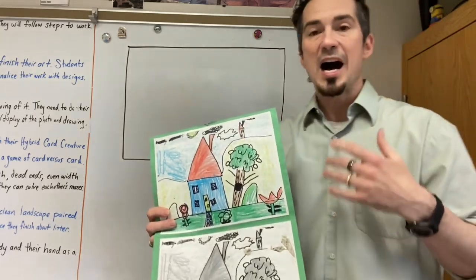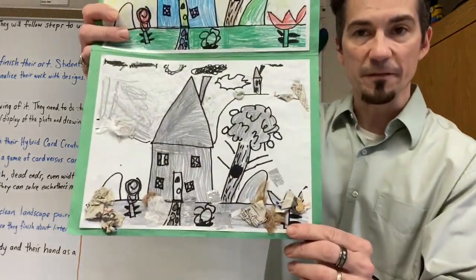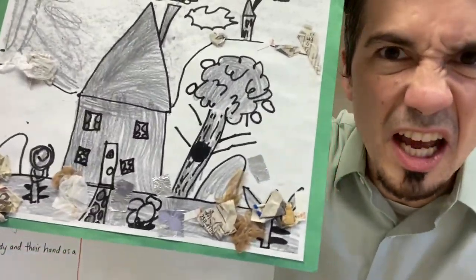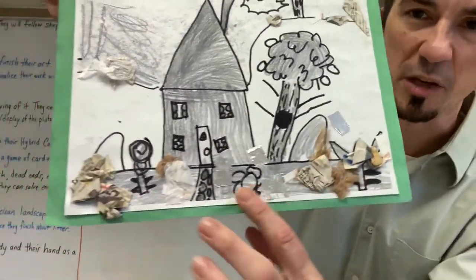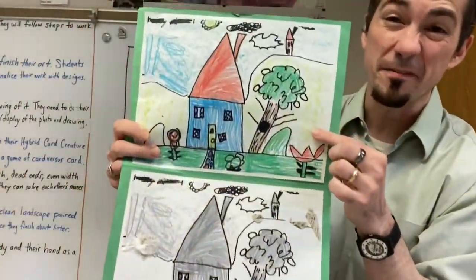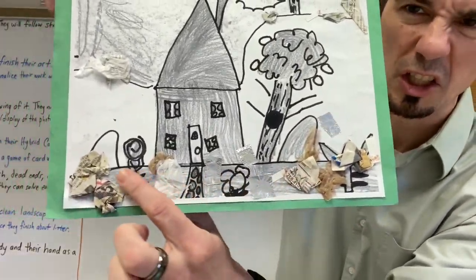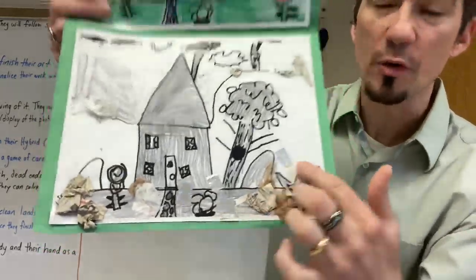I'm going to photocopy them. And then next class, you're going to have your photocopy next to your beautiful landscape. You're going to have your litter landscape. It's going to be dark and gray because I photocopied it on a black and white printer. It's going to have little, you're going to glue pieces of litter onto it.